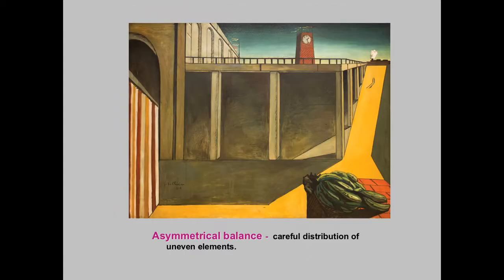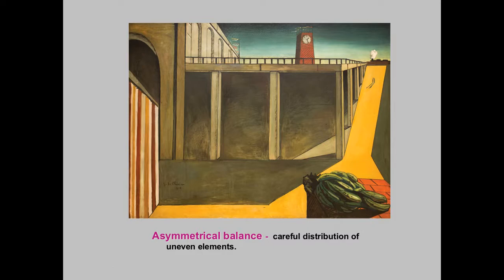Asymmetrical balance — we're back to this one again. If we put a line down here, it's not very symmetrical. It's got some bright colors over here and some open space, and then over here there's a large object in the foreground and a small object on the other side. So it's a bit lopsided — that is asymmetrical, uneven.